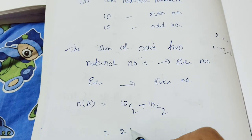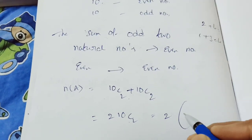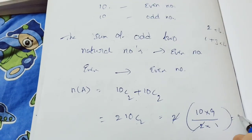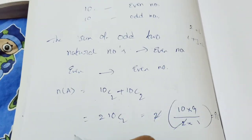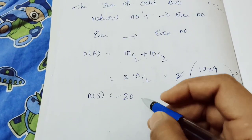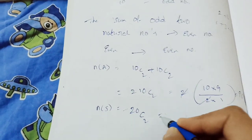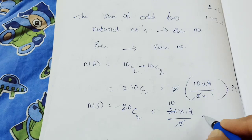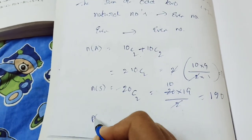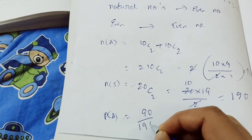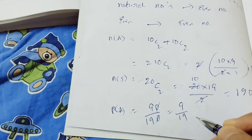For the sum to be even, we need either both even or both odd. Number of ways = 2 × 10C2. 10C2 = 10×9 divided by 2×1 = 45. So favorable outcomes = 2 × 45 = 90. Total outcomes N(S) = 20C2 = 190. So P(A) = 90 by 190, which simplifies to 9 by 19.